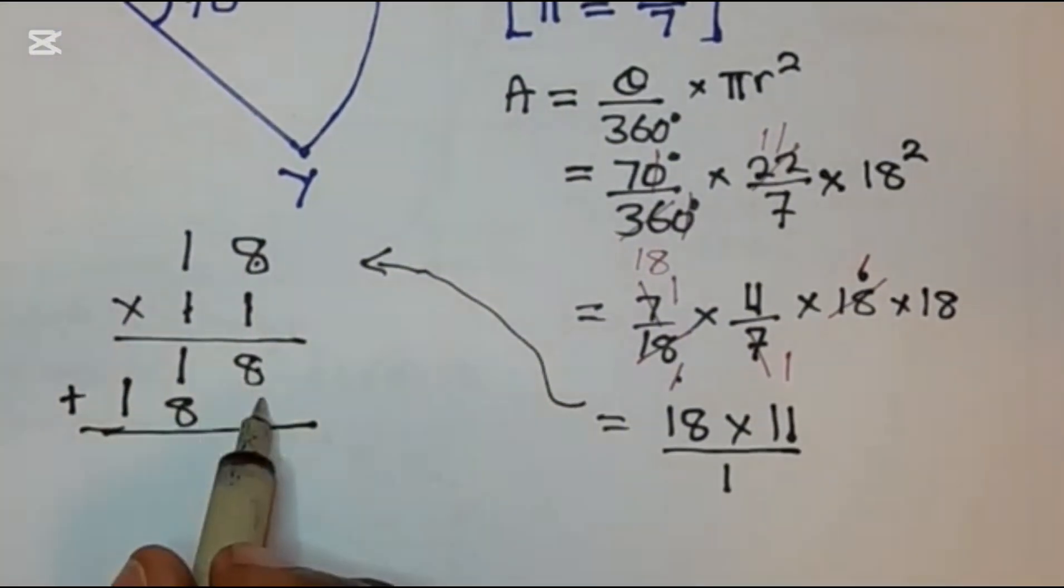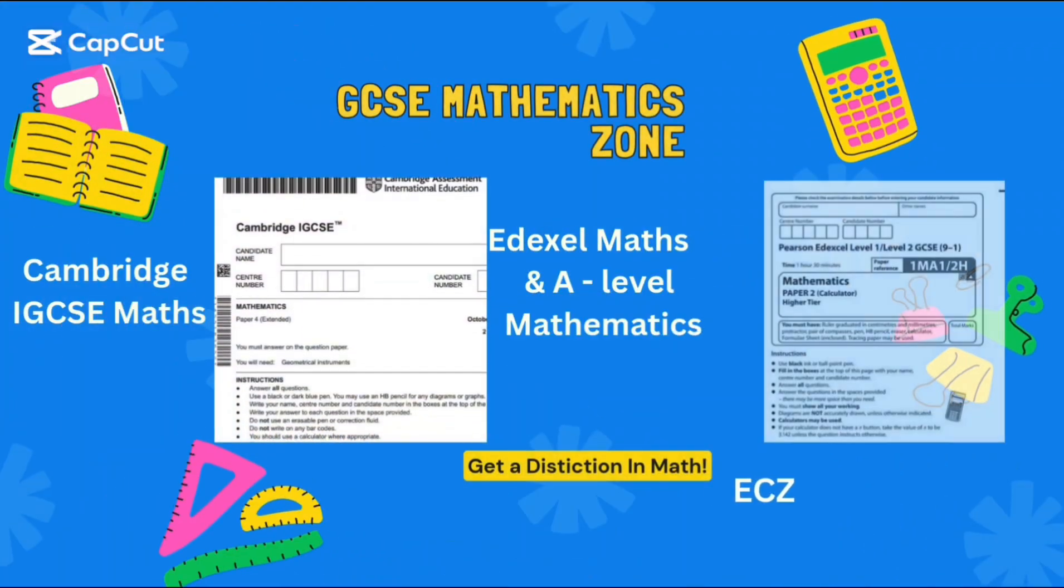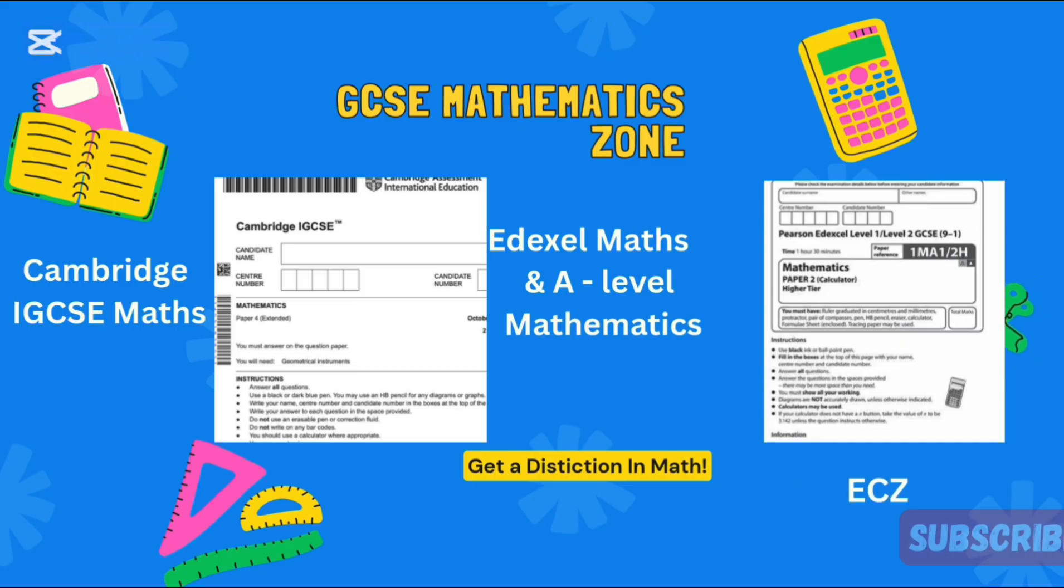8 plus here, here is the same as 0. 8 plus 0 is just 8, 1 plus 8 is 9, then this is 1. So you conclude and say therefore the area is equal to 198 square centimeters.